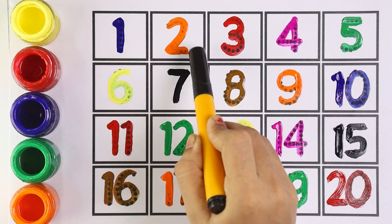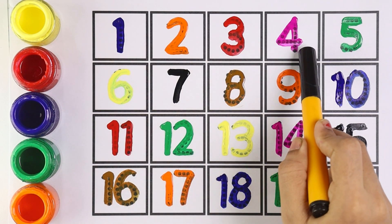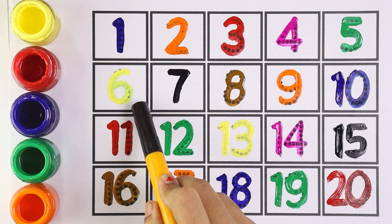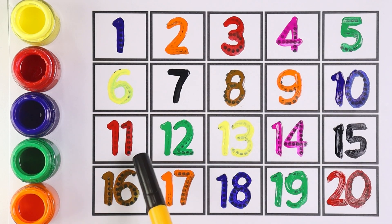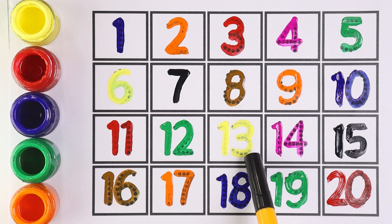Let's begin: one, two, three, four, five, six, seven, eight, nine, ten, eleven, twelve, thirteen, fourteen, fifteen, sixteen, seventeen, eighteen, nineteen, and twenty.